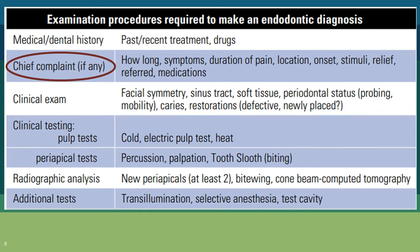After writing down the chief complaint, we elaborate on it through the history of present illness. We ask the patient: how long have they been suffering — the duration of pain; does pain linger after the stimulus is removed; what are the symptoms; is the location generalized or localized; is onset spontaneous or stimulus-induced; are there relieving factors, referred pain, or medications? These questions already give us 50% of the diagnosis.